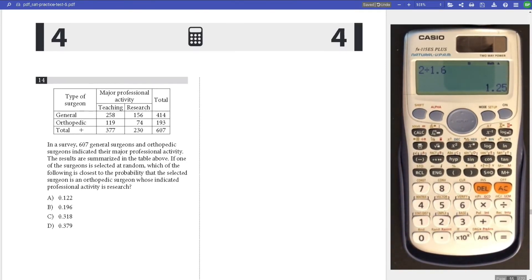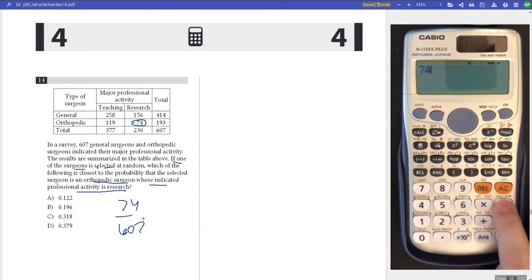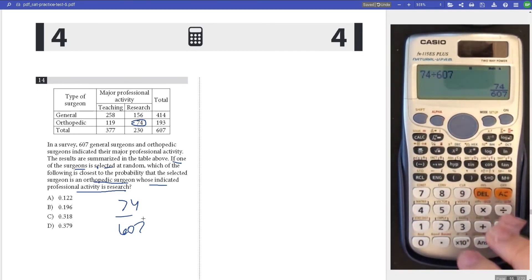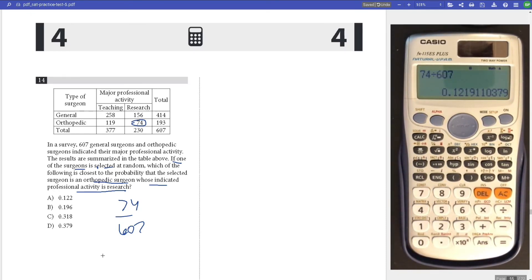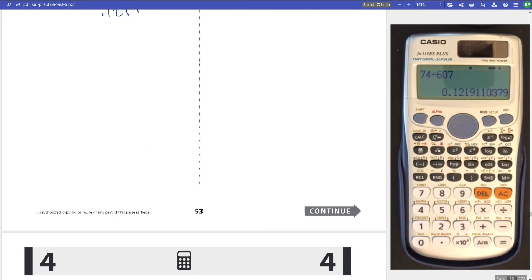Number 14, we're given this chart. If one surgeon is selected at random, what is the probability that the selected surgeon is an orthopedic surgeon whose professional activity is research? We're looking at research and orthopedics, 74 divided by 607. Do that on your calculator, you get 0.121 or 0.122.